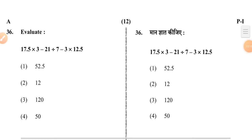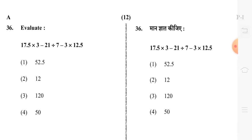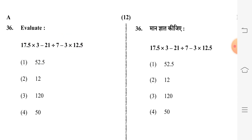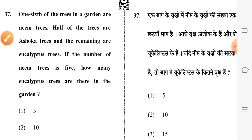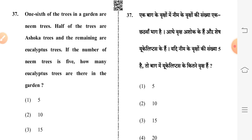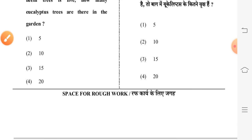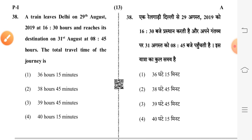Question 36: evaluate 17.5 × 3 − (21 ÷ 7) − 3 × 12.5 — correct option is 12. Question 37: one-sixth of the trees in a garden are neem trees, half are ashoka trees, and the remaining are eucalyptus trees. If the number of neem trees is 5, how many eucalyptus trees are there? Second option is correct: 10.